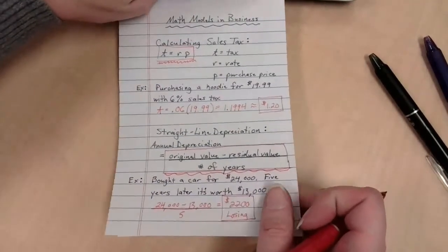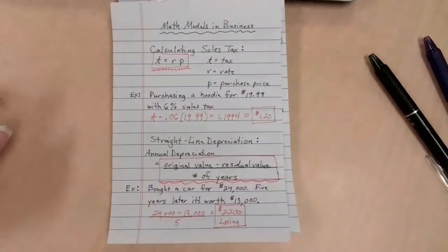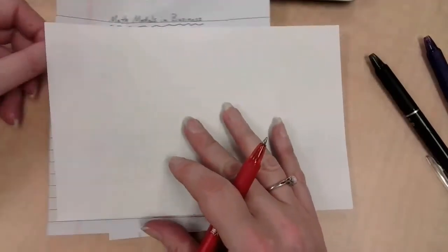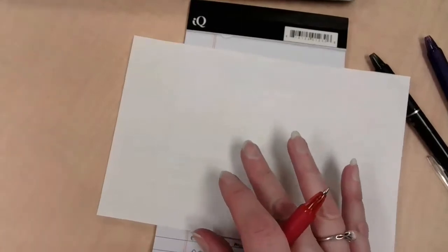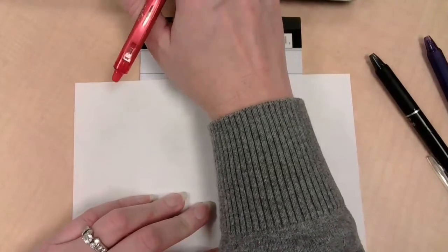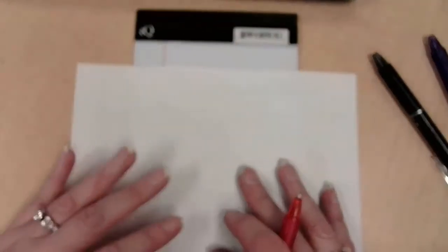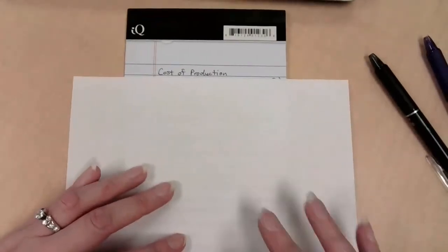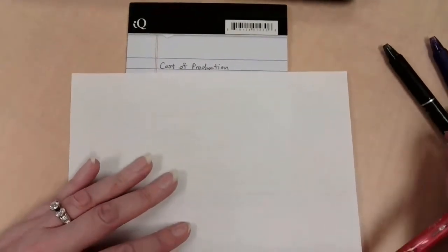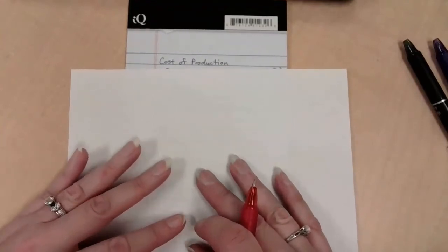So two down, two to go. This next one's a doozy, though. It actually comes in multiple parts. I want to talk about manufacturing and production and retail for a moment here. I've got three formulas here, but they really kind of all go together.